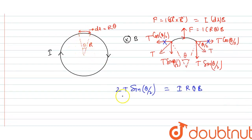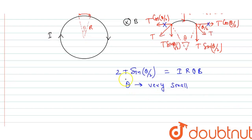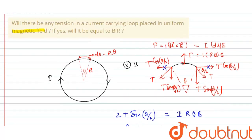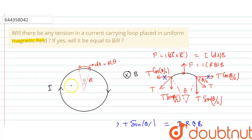Since we have taken a very small section, θ is very small, and when θ is very small, sin(θ/2) ≈ θ/2. Substituting, 2T·(θ/2) = i·R·θ·B. The θ and 2 cancel out, giving tension T = B·i·R.